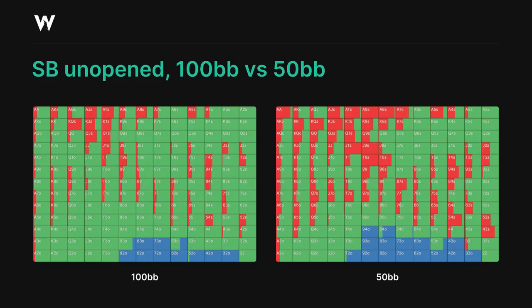At 50 big blinds, we're folding very slightly more often, and our raising range is staying polarized — this is a common trend — but we're now heavily favouring raising with most of the strongest suited hands, and many of the middling offsuit combos are now raising at a much higher rate as well.